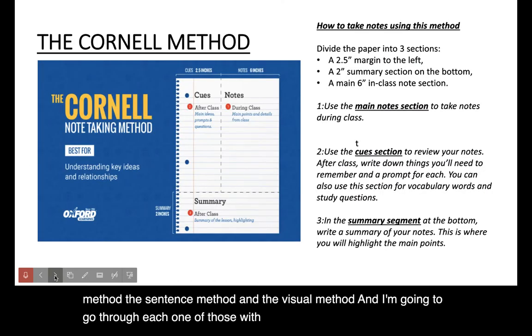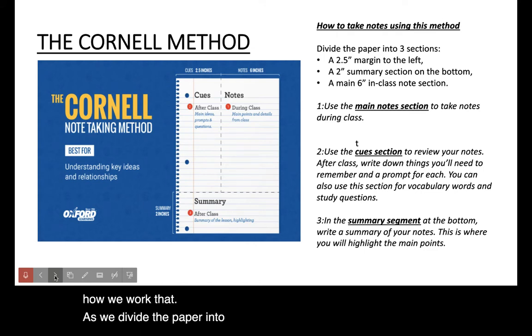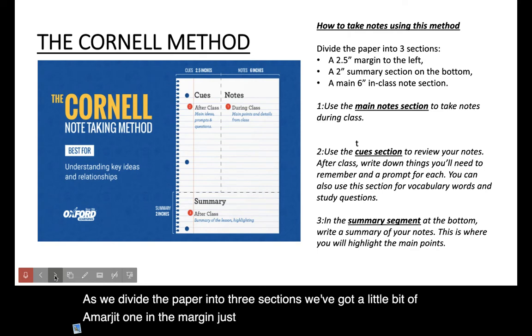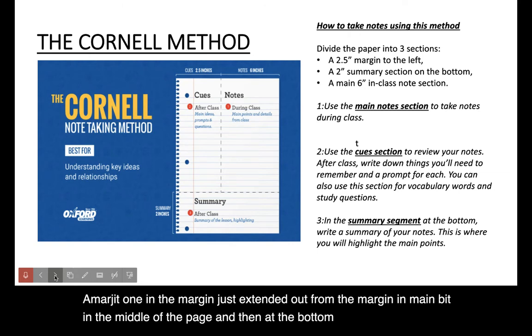So the Cornell method, how we work that is we divide the paper into three sections. We've got a little bit of a margin, one in the margin just extended out from the margin, a main bit in the middle of the page, and then at the bottom of the page we have a summary.